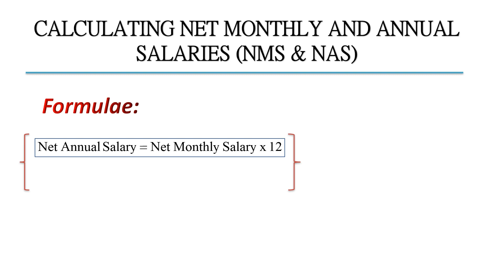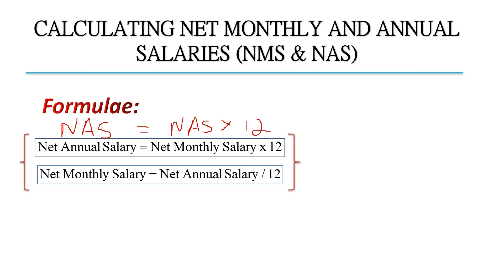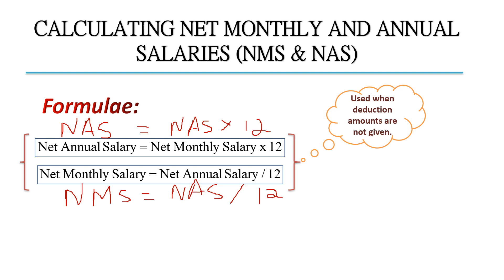The net annual salary equals the net monthly salary times 12: NAS = NMS × 12. The net monthly salary equals the net annual salary divided by 12: NMS = NAS ÷ 12. These two formulae are used when the deduction amount is not given in the question.